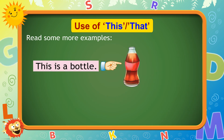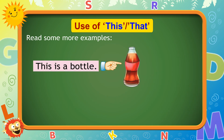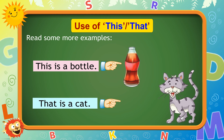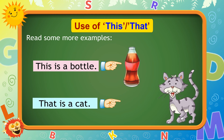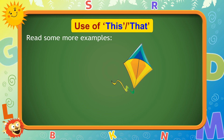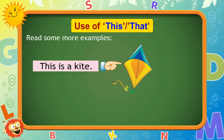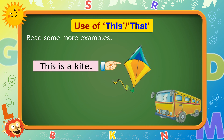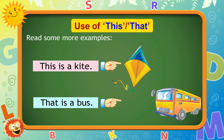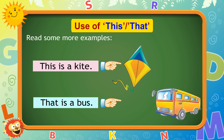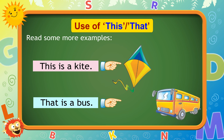This is a bottle. That is a cat. This is a kite. That is a bus.